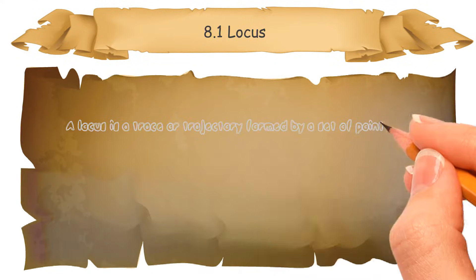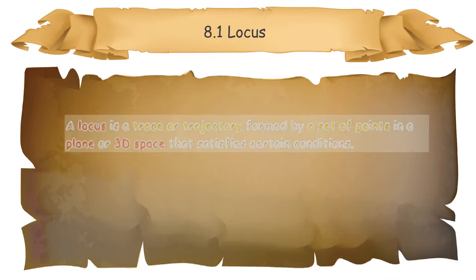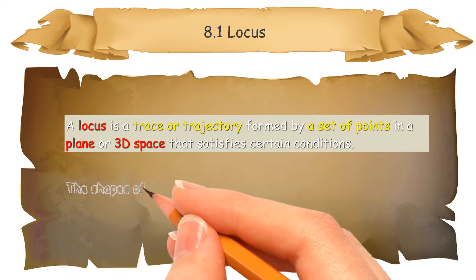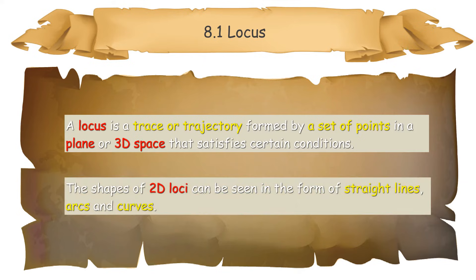A locus is a trace or trajectory formed by a set of points in a plane or three-dimensional space that satisfies certain conditions. The shapes of two-dimensional loci can be seen in the form of straight lines, arcs and curves.